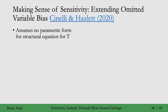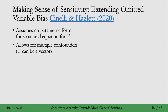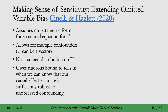They assume no parametric form for the structural equation for T. Also, their approach allows for multiple confounders — in other words, U can be a vector. They don't assume that U conforms to any specific distribution. And very importantly, they give rigorous bounds to tell us when we can know that our causal effect estimate is sufficiently robust to unobserved confounding.